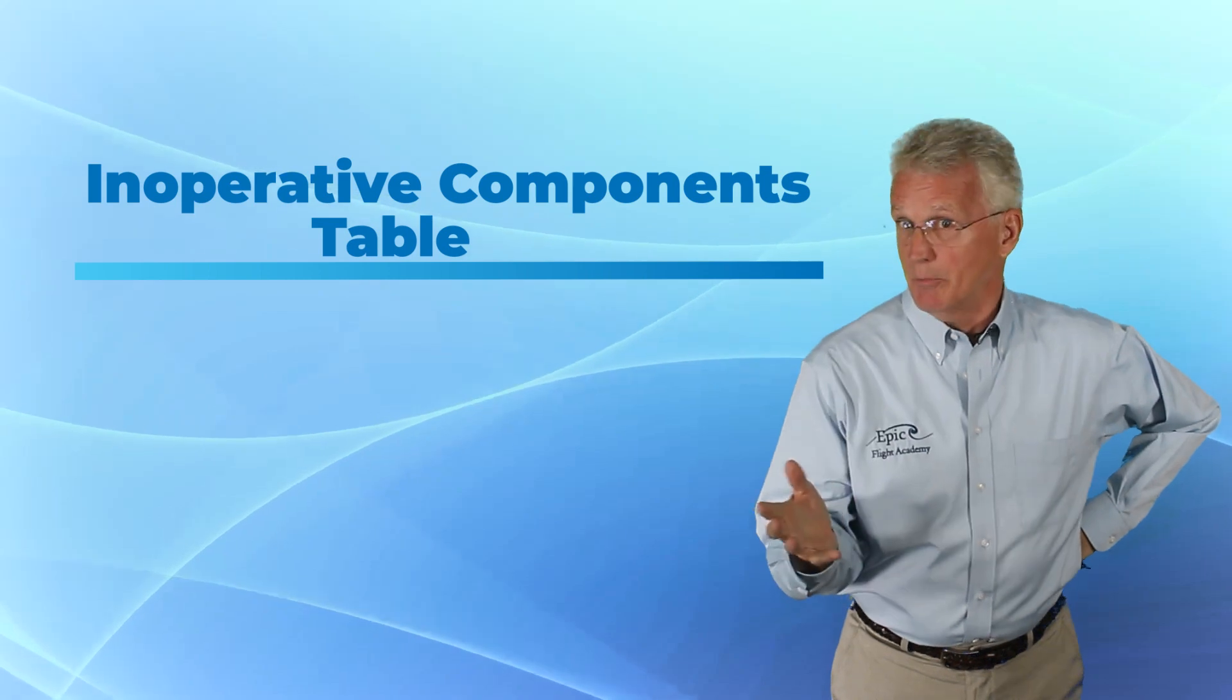Wouldn't it be nice if there was a table somewhere that would list the inoperative equipment and state what it is that we as pilots should do? You know, if there were such a table, you know what I'd call it? I think I'd call it the inoperative components table.